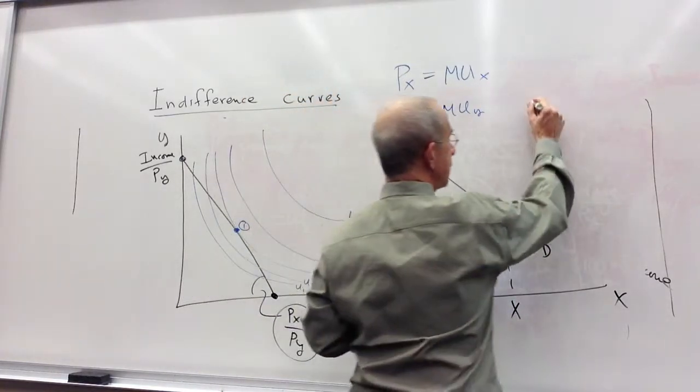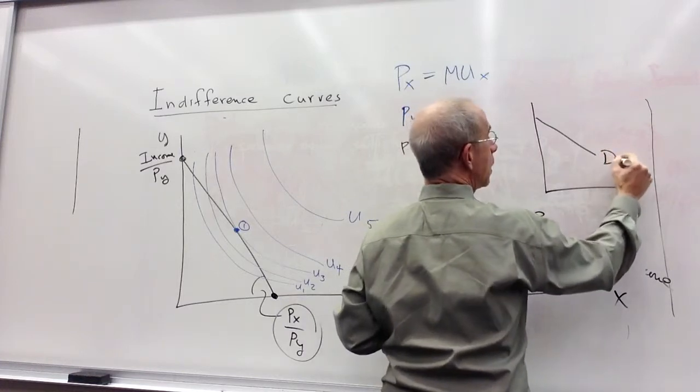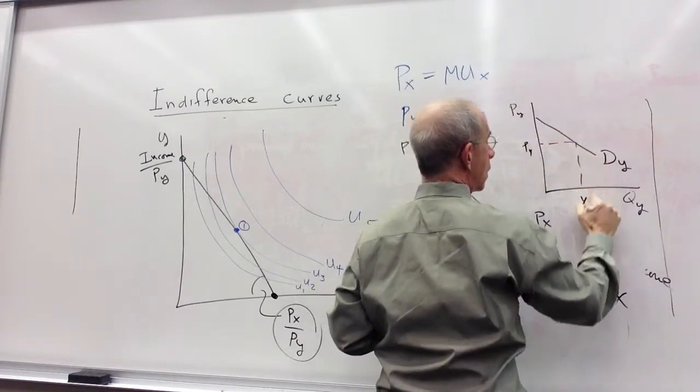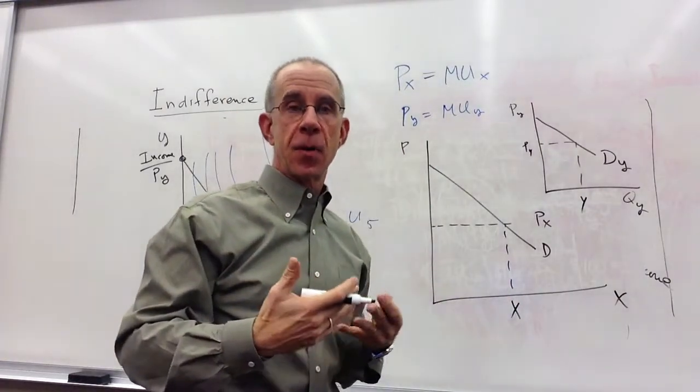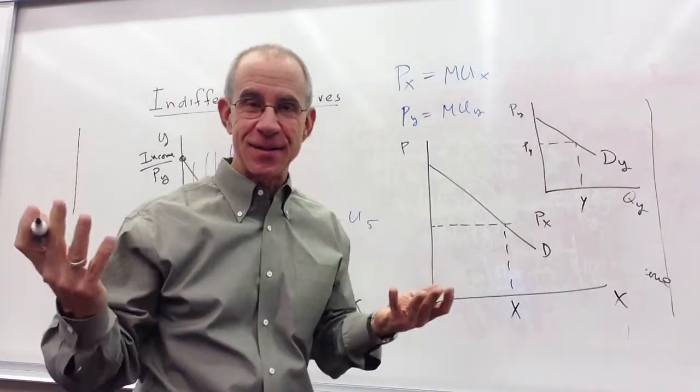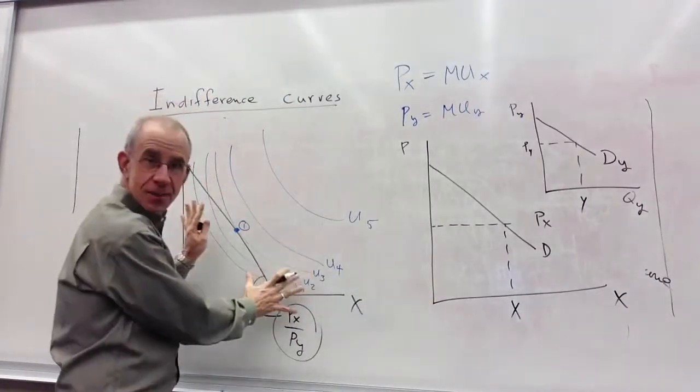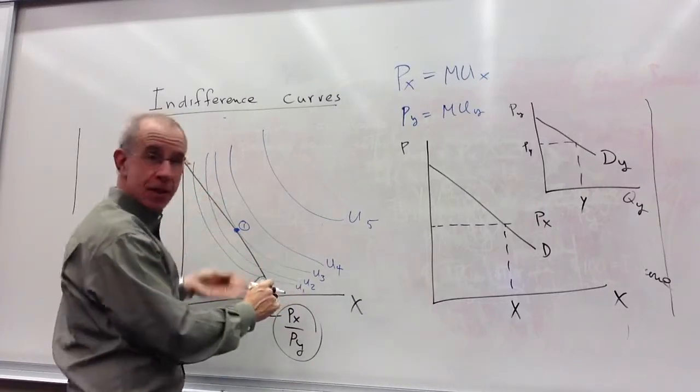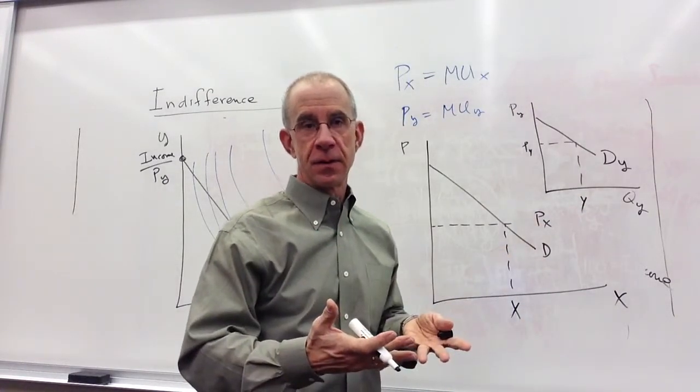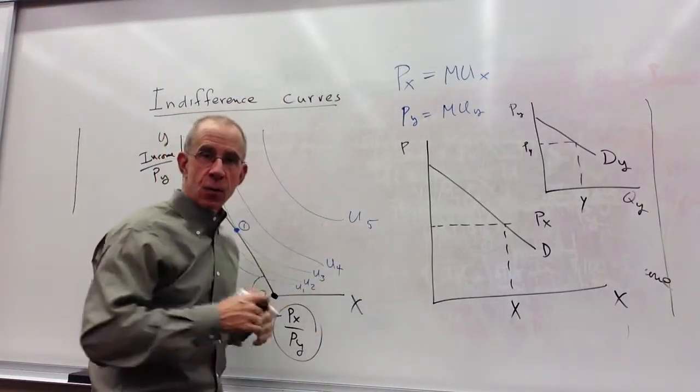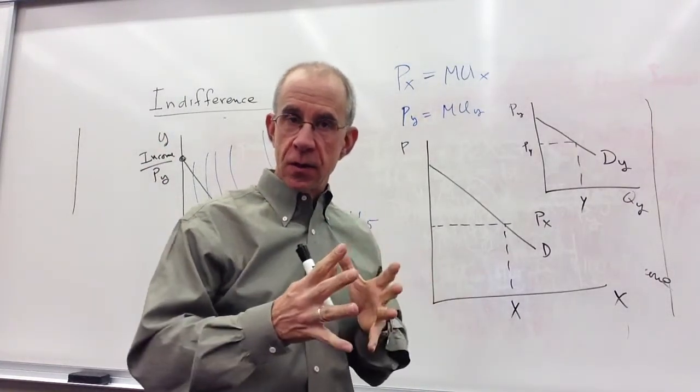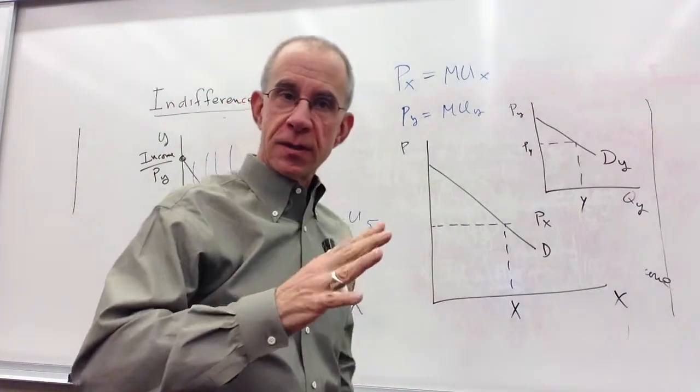We would have the same thing for good y, where consumers buy the product up to where the marginal benefit equals the price. This depiction of indifference curves and a budget constraint is simply two demand curves on the same graph. It's the same information, just done simultaneously. What's going to be useful is that when you put the two markets together, you'll be able to really see clearly the trade-offs.